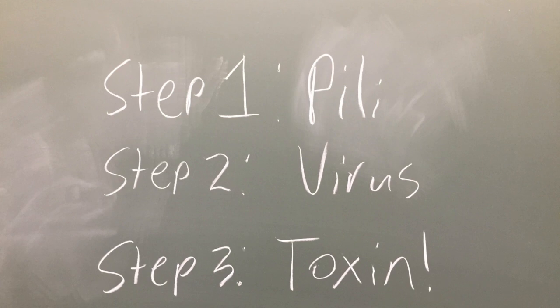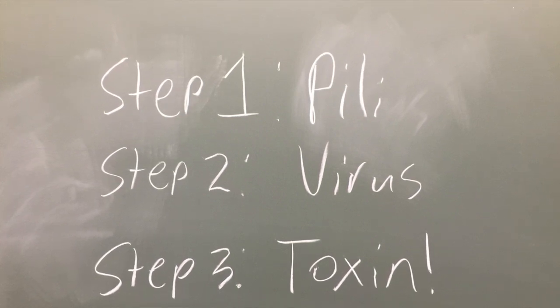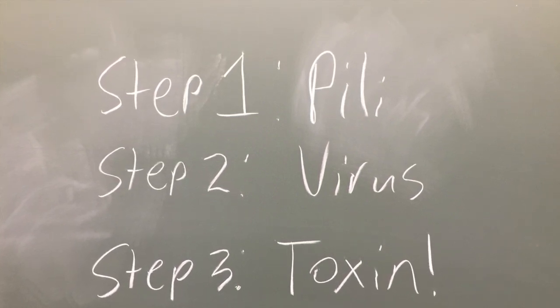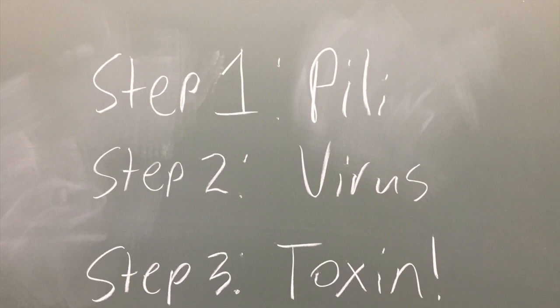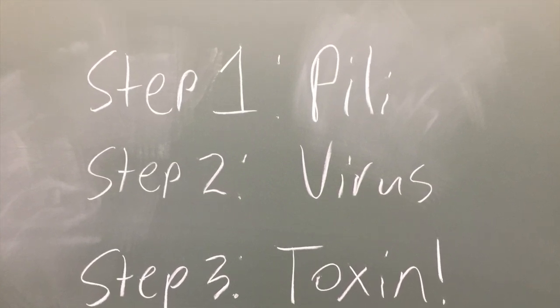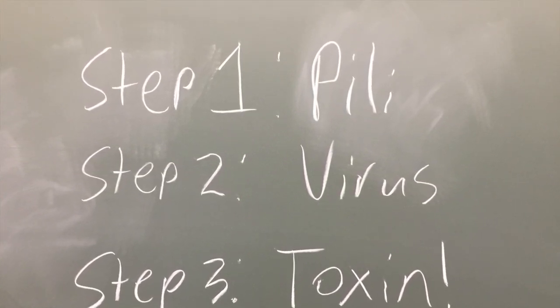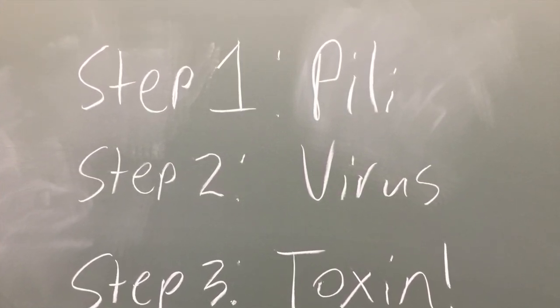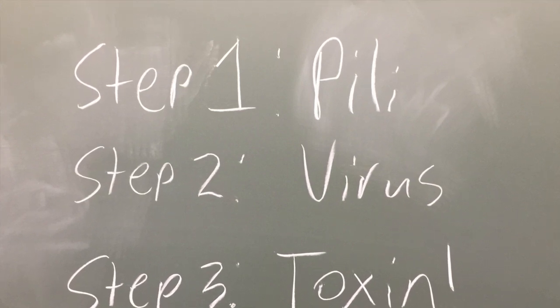To sum up, pili give V. cholerae the two things it needs to be pathogenic. They allow the bacteria to bind to human intestines, meaning they can replicate enough to cause infection, and they allow the virus carrying the toxin gene to bind the bacterial cell and infect it. This is beneficial for both the bacterium and the virus because it gives them an easy, albeit gross, way to come in contact with new organisms to infect.